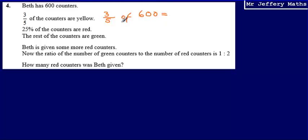So in order to do that, take 600, divide by 5, that would tell us what one-fifth would be, and then multiply that by 3. So 600 divided by 5, that's going to give me 120, and then multiply that by 3 for 360. So there are 360 yellow counters.